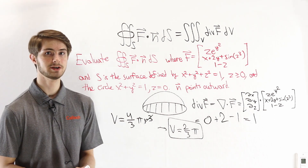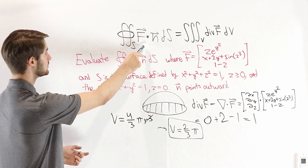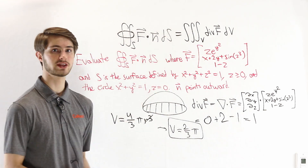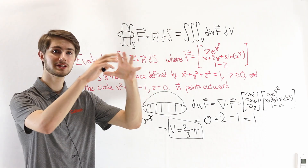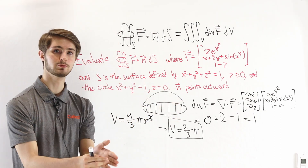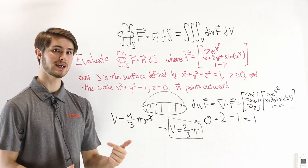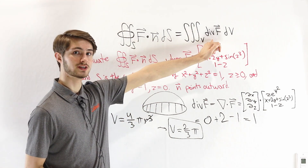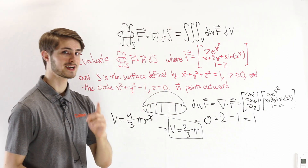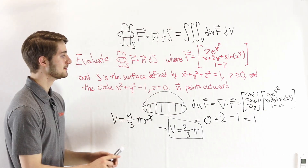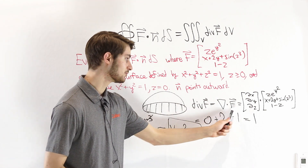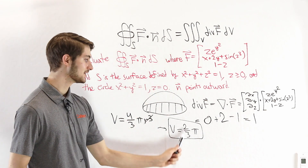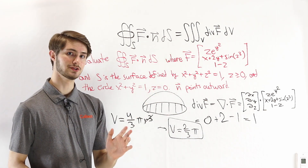That is the divergence theorem — it gives a relationship between the surface integral around the boundary of a volume and the integral of the divergence over that volume. It comes from the fact that we can always split a closed surface integral into parts and still get the same answer, and we keep dividing until it looks like divergence. Because divergence is a limit of surface integrals, but has a nice formula in terms of partial derivatives, this often simplifies calculations and lets us get answers we couldn't reach any other way.